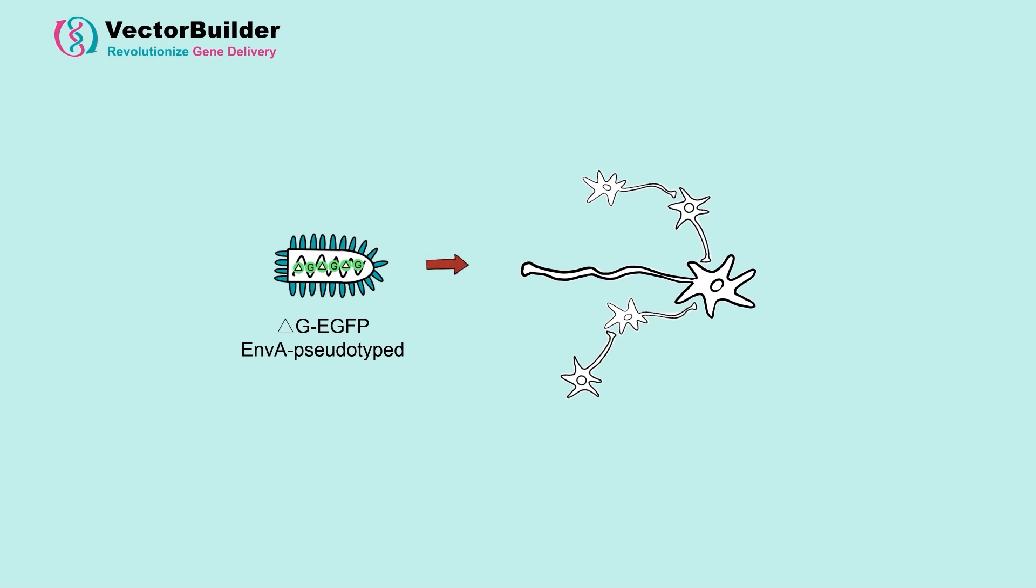To have accurate delivery, we express TVA and G protein in the GnRH neurons we're targeting. And we often have another marker like mCherry to label the primary neurons themselves.